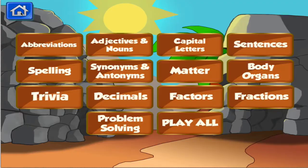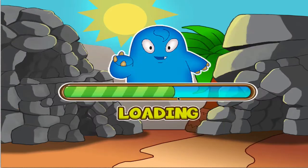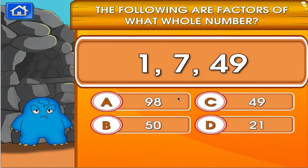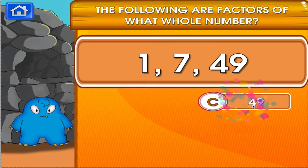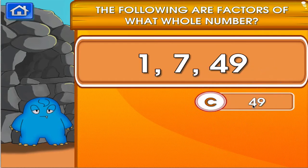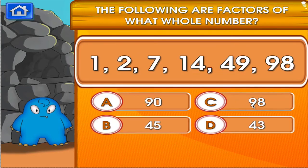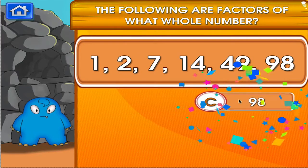Choose the activity you want to play. Factors. Tap the correct answer. Good job! That's another right. Tap the correct answer. Woo-hoo!